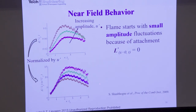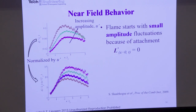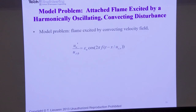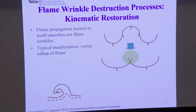But then they start to diverge from each other. Notice that the order flips — the biggest scaled amplitude is the smallest: the purple line, which is the lowest excitation amplitude, is the biggest scaled amplitude. The red line is shorter. So that tells you there's some saturation phenomenon going on — I'm hitting the flame harder but not getting the same response. And kinematic restoration is exactly what's driving this behavior.